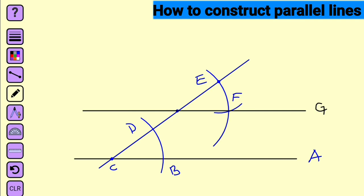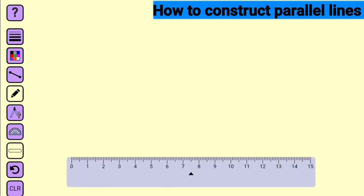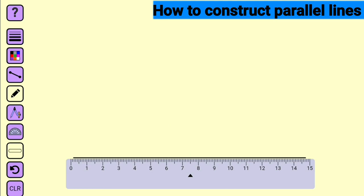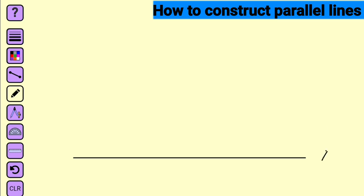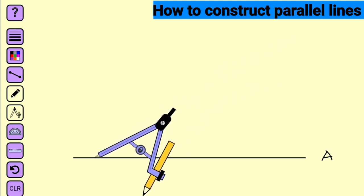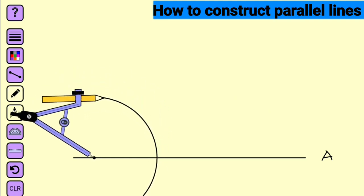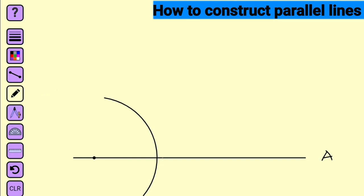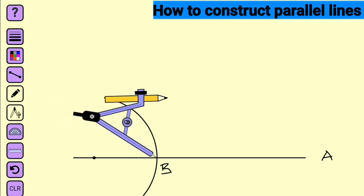Now let me show you the second method. Bring out your ruler and draw a line of convenient length — let us call this line A again. Bring out your compass and at a convenient radius, choose any point on this line. We are going to draw a semi-circle to cut line A. Name the intersections B and C. Take the pointer of your compass to point B and, at the same radius, construct another semi-circle to cut the first one and line A.